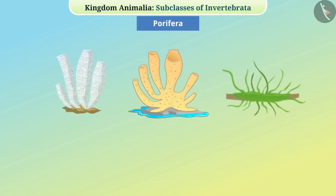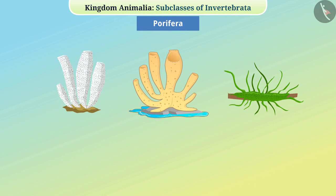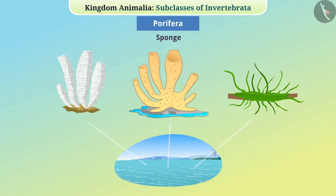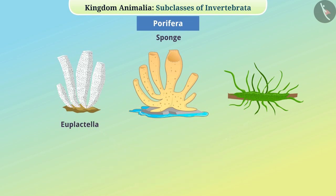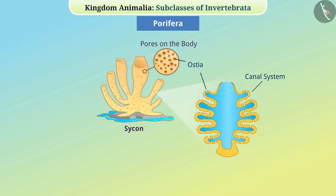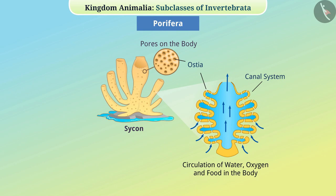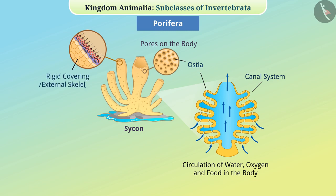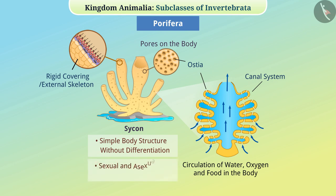Porifera: These are a group of animals with pores, commonly known as sponges. They are found in saline areas such as the sea. Some examples are Euplectella, Spongia, Sycon, etc. They are immovable and attached to some base. They have many pores in their entire body called ostia, connected to a canal system through which water, oxygen and food circulate. Their body is covered with a rigid external skeleton. Their body structures are simple and do not differentiate into tissues. They can produce offspring through sexual and asexual reproduction.